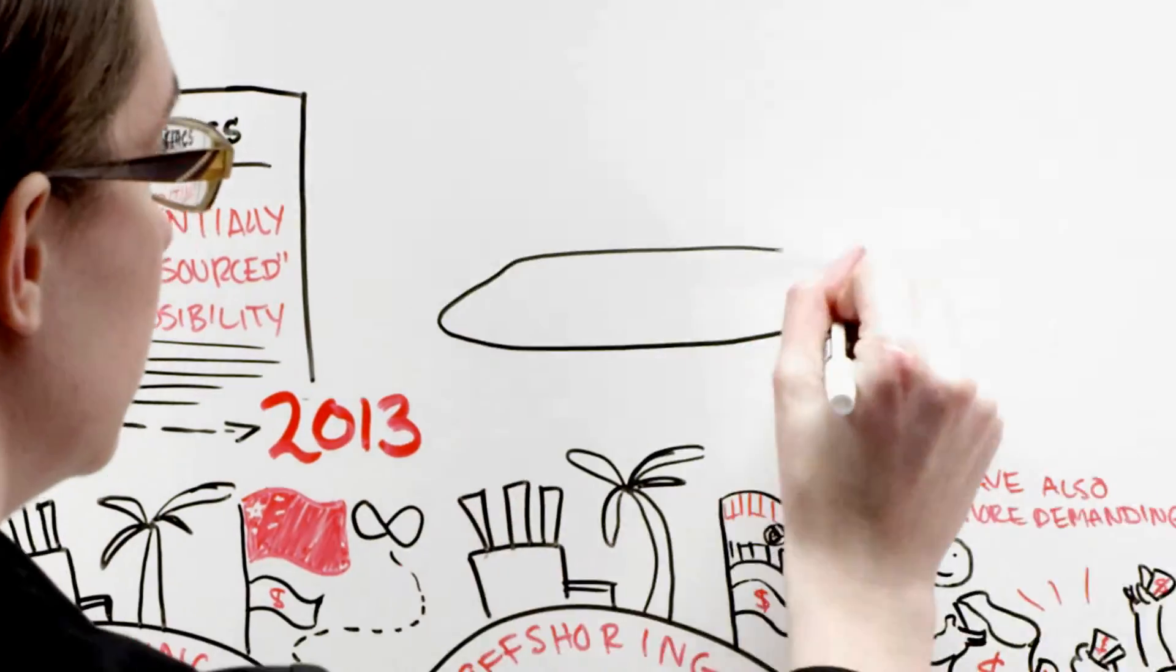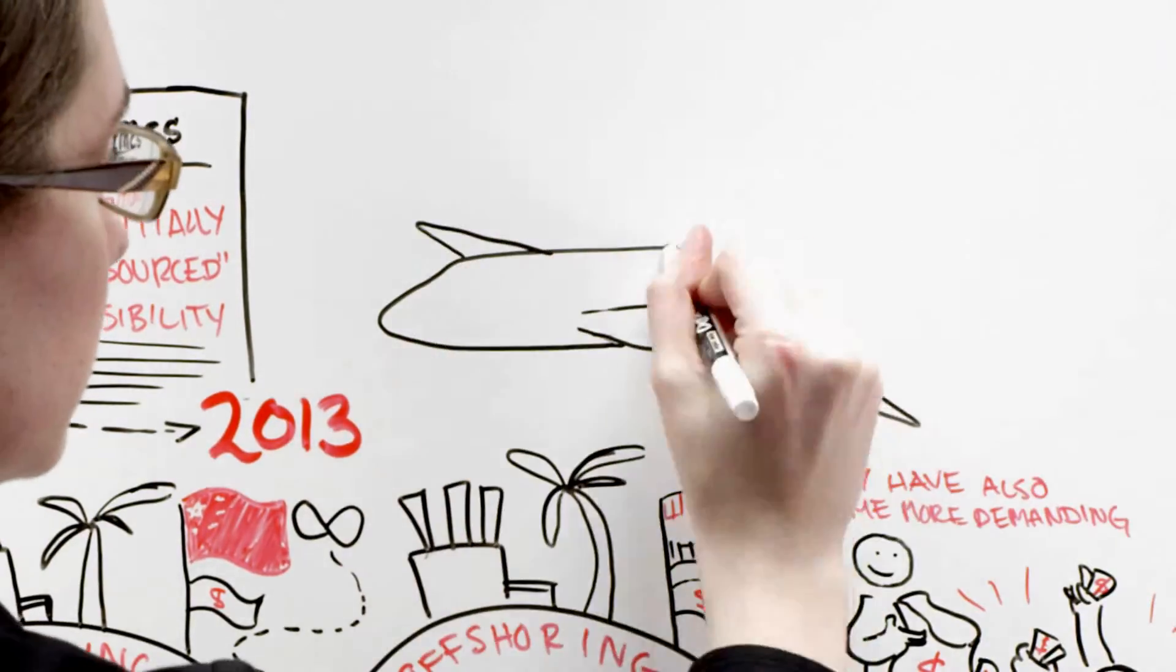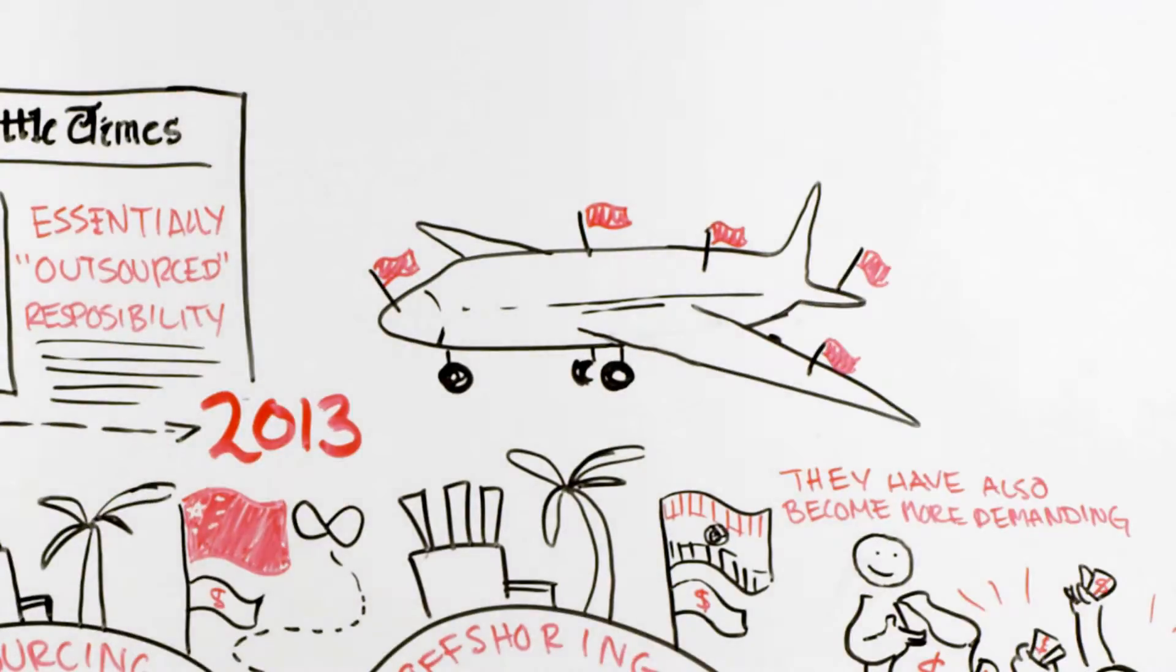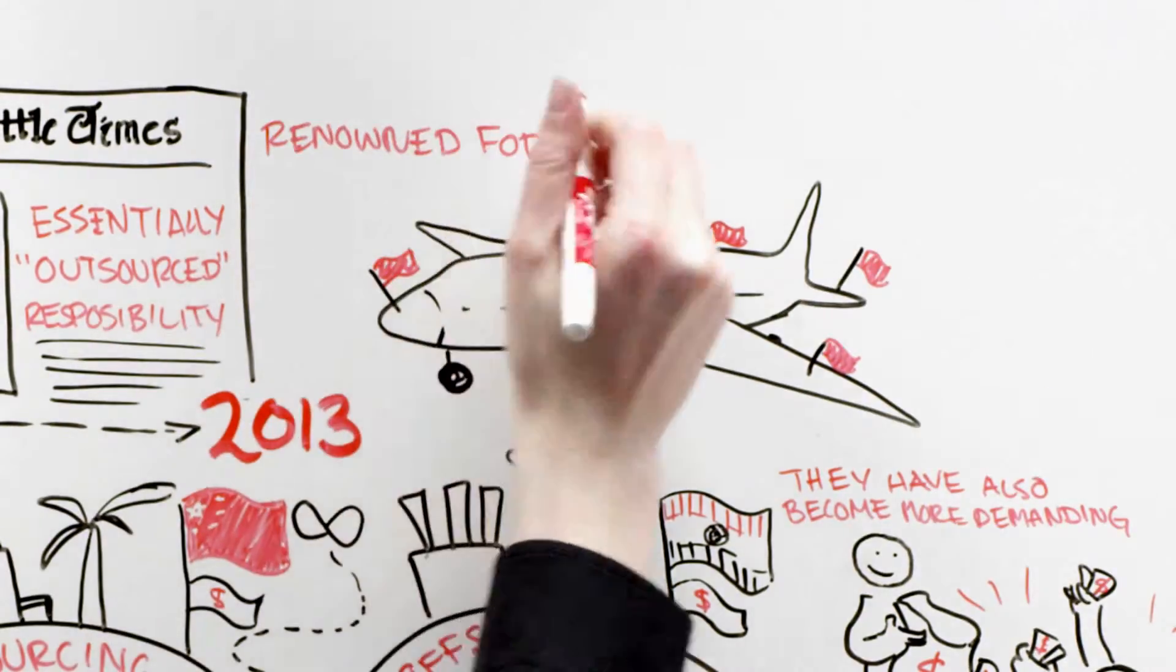Boeing is no stranger to outsourcing. On earlier jets, the company outsourced work on landing gear, batteries, and engines for the 777 and 737. Both planes are renowned for their reliability.